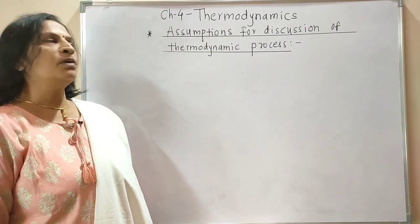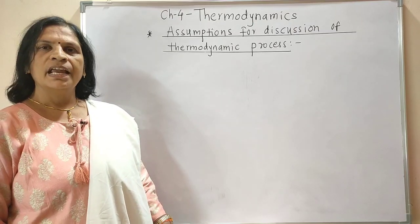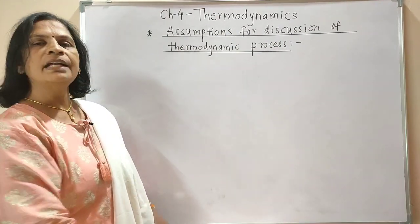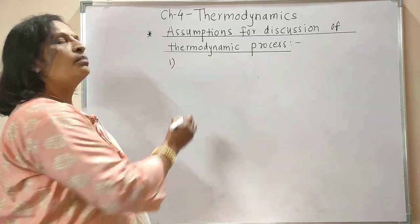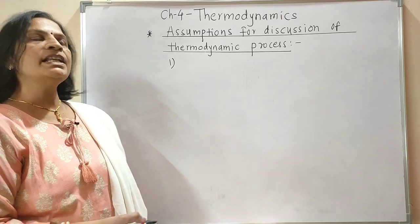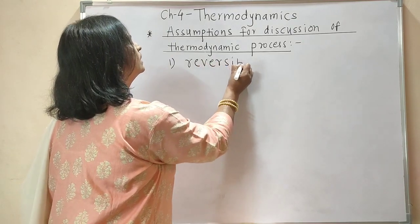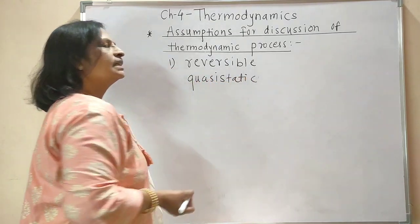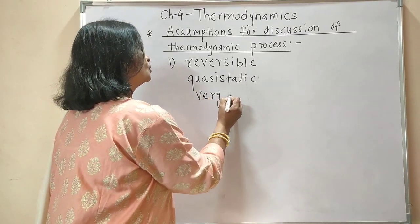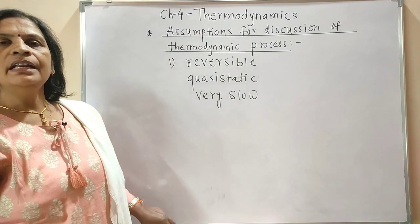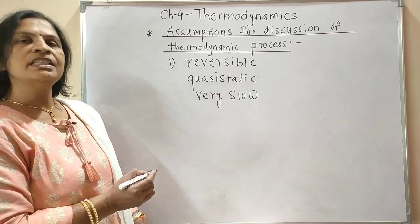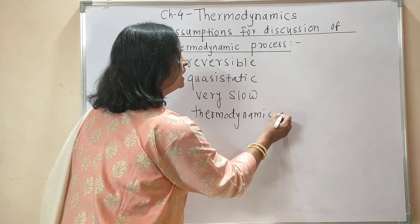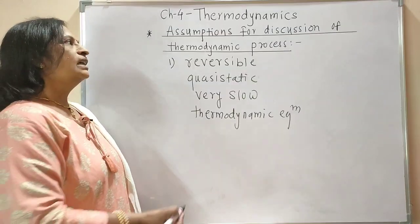We will study different types of thermodynamic processes and for that we have to consider the assumptions for discussion of thermodynamic processes. The first assumption is that the majority of processes are reversible — they should be quasi-static, meaning they should be extremely very slow, and the thermodynamic equilibrium of the system should be maintained. This is the first assumption.